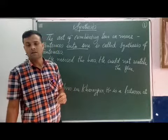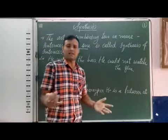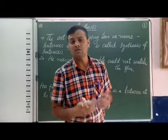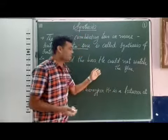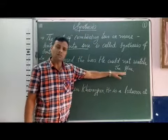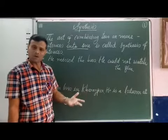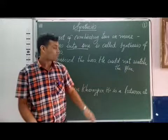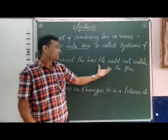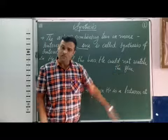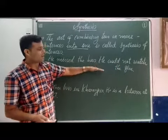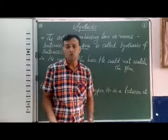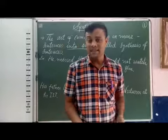Now when we combine them, we can use a conjunction — but we are not going to use a conjunction. Using a conjunction to join two sentences is very easy. For example: 'He could not watch the film because he missed the bus,' or 'He missed the bus, so he could not watch the film,' or 'As he missed the bus, he could not watch the film,' or 'Since he missed the bus, he could not watch the film.' In these sentences we have used conjunctions: so, because, since, and as.